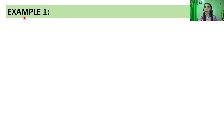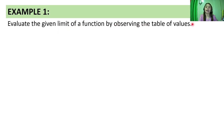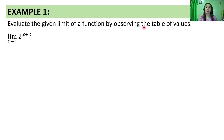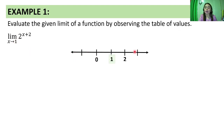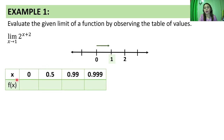So let's start with example number 1: evaluate the given limit of a function by observing the table of values. The given is the limit of 2 raised to x plus 2 as x approaches 1. We have an exponential function here — 2 raised to x plus 2. We're going to find its limit using the table of values. We'll locate the constant 1 on the number line. The number line extends in both directions, with 0 to the left and 2 to the right. So we'll get x values from the left of the constant approaching 1.